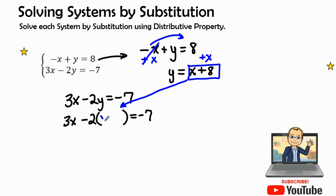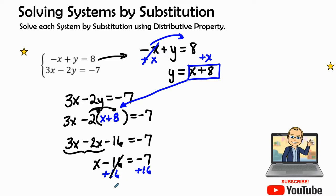Now it's time to do some distributive property. I'm going to write the 3x down. -2 times x is -2x, -2 times a positive 8 is -16, which equals -7. I need to combine like terms, so 3x - 2x is x - 16 = -7. To get that -16 over, I'm going to add 16 to both sides. That becomes 0, I bring my x down, and so I have x = 16 - 7 is 9.